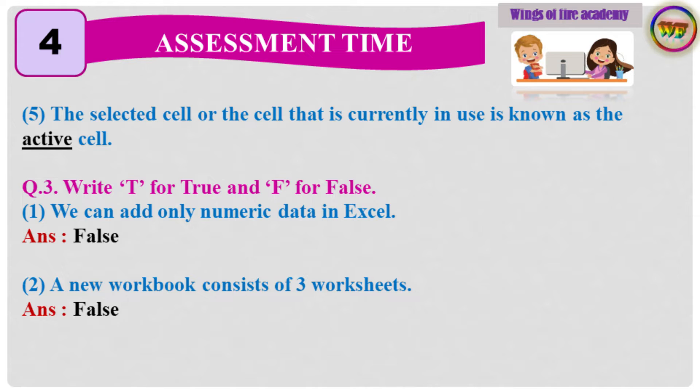Question 3: Write T for True and F for False. 1. We can add only numeric data in Excel. Answer: False. 2. A new workbook consists of 3 worksheets. Answer: False.